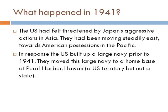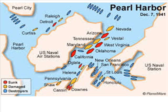1941 is a big year. The U.S. had already been feeling threatened by Japan's aggressive actions in Asia — they were moving east toward American positions in the Pacific. So the U.S. was prepping for war with Japan. We built up a large navy and moved it to a home base at Pearl Harbor, Hawaii. We took our entire Pacific fleet and set them in this territory — Hawaii was not yet a state until 1959 — and set up a military base, ready to fight Japan.